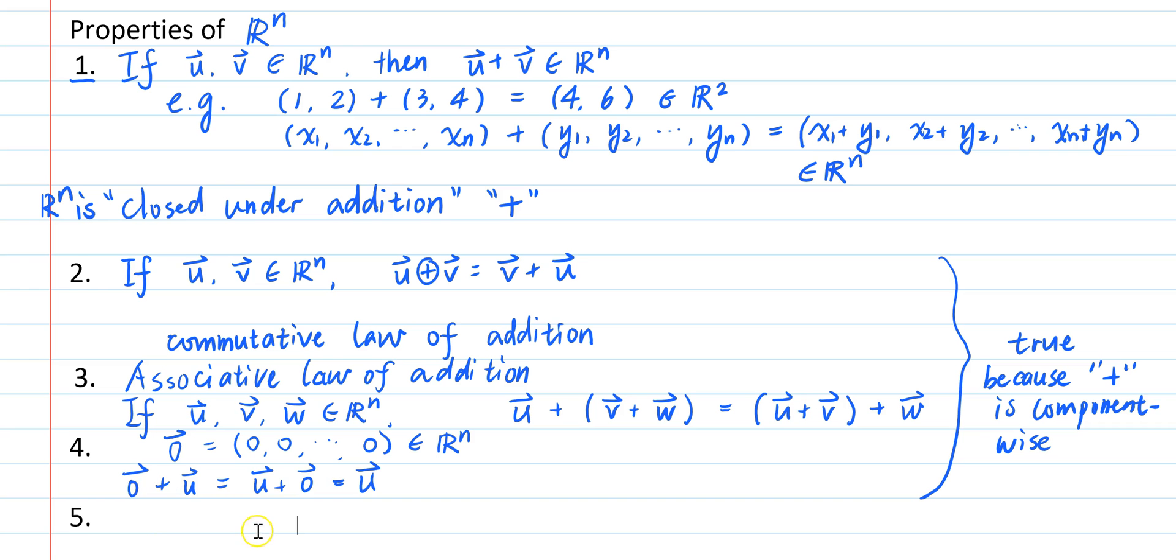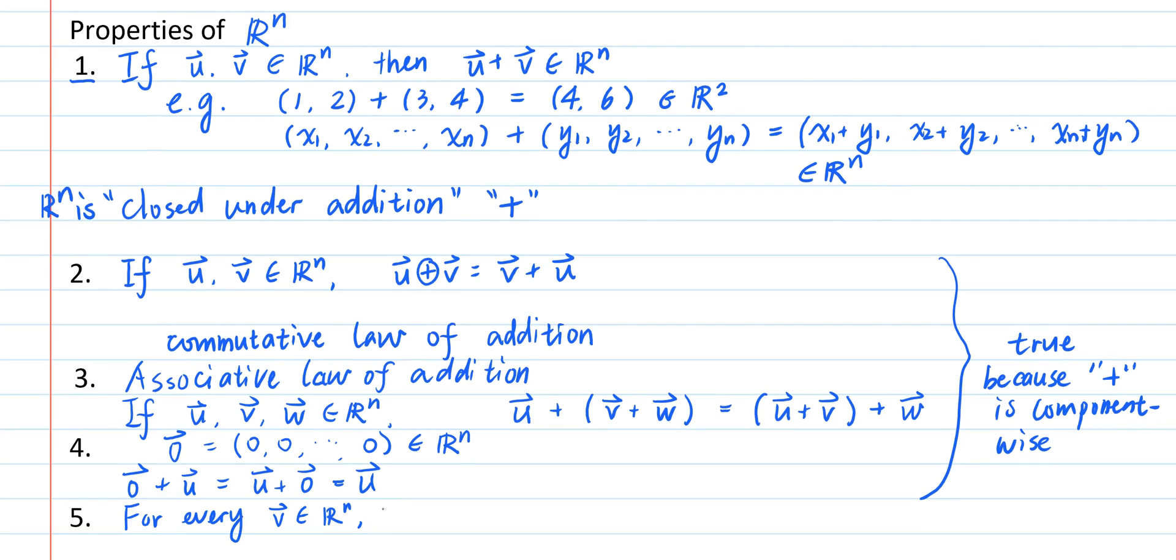Okay, let's continue with the properties of R^n. The fifth property says that every element in R^n has a negative so that the sum of this element and its negative is always the zero vector.